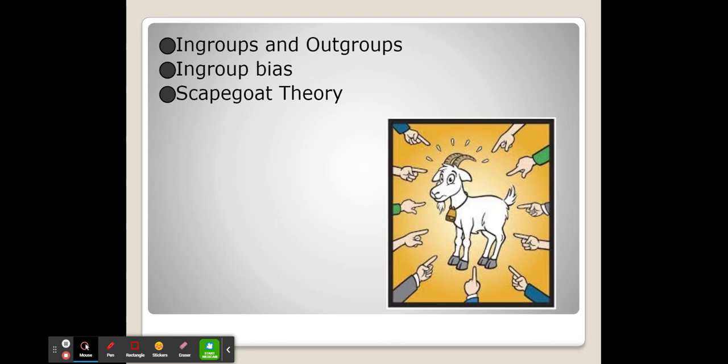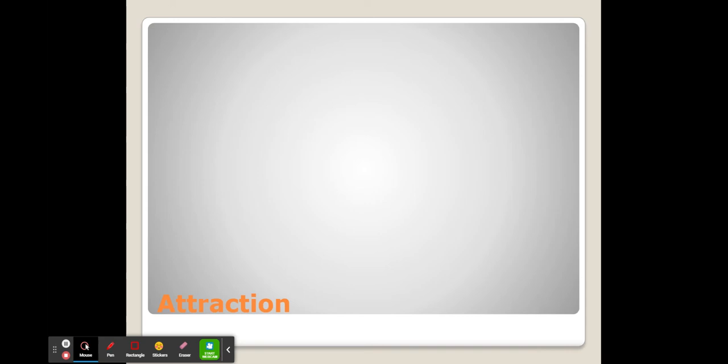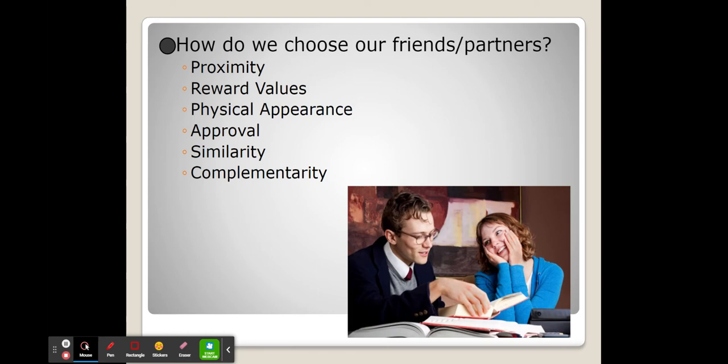Now we look at attraction. With attraction we're picking people to be our friends, partners, or acquaintances. But how do we choose them? There are six different ways that we pick our partners. We call these the laws of attraction. One is proximity, when you're physically close to another person. The second is reward values, when a person gives us some sort of reinforcement for our behavior because it validates our behavior and makes us feel good.